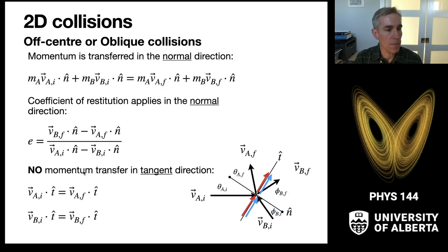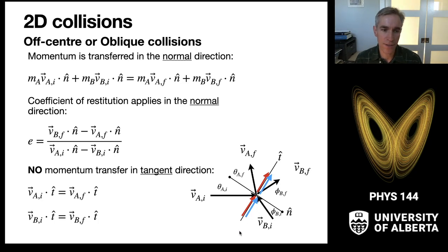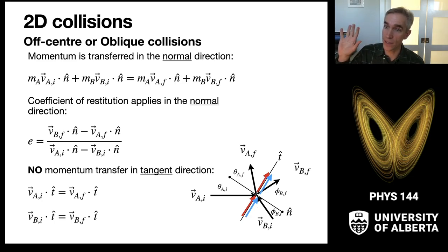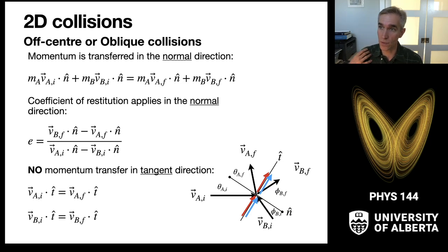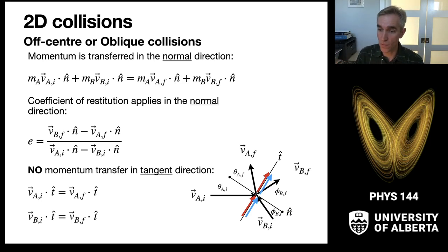There is no momentum transfer in the tangent direction. The velocity vectors moving in the tangent direction for the two balls are unchanged before and after the collision — they just stay the same. This allows us to reduce everything to a one-dimensional problem, provided we resolve the geometry.